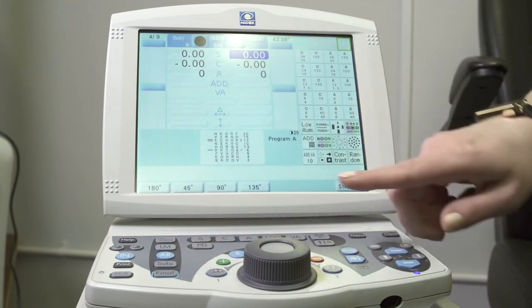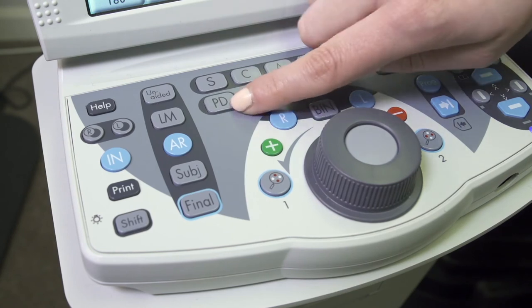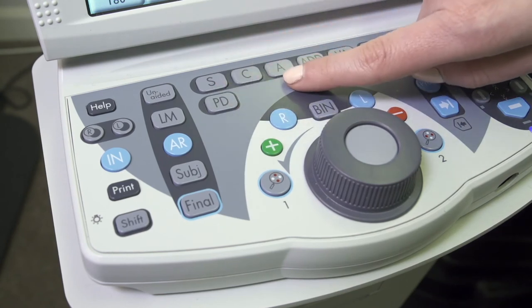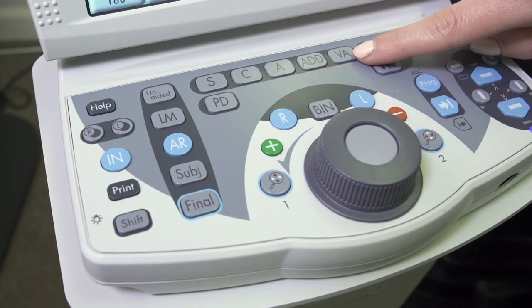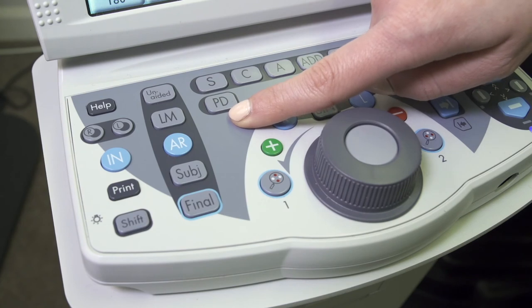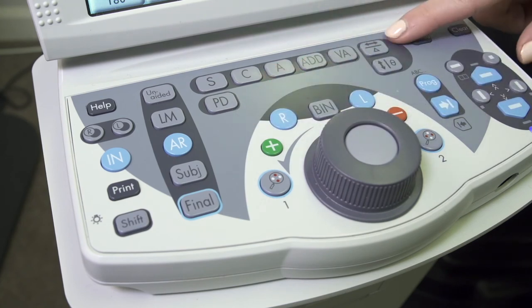At the top half of the panel just here, we're able to change between sphere, cylinder, axis, add, and visual acuity measurements, as well as the ability to measure the patient's PD. We're also able to add in vertical and horizontal prism as required.